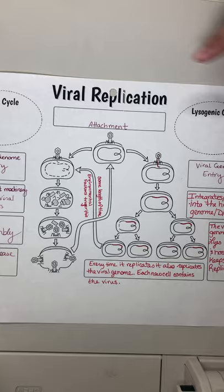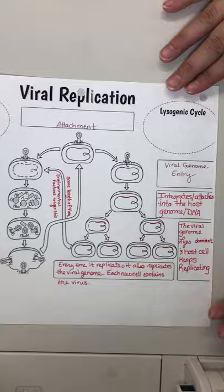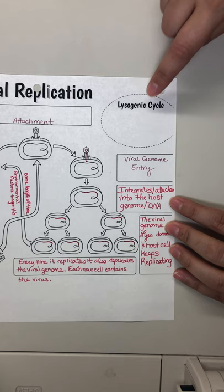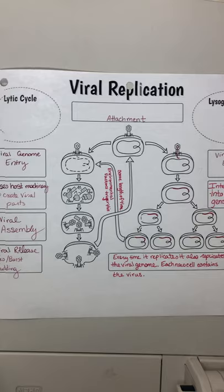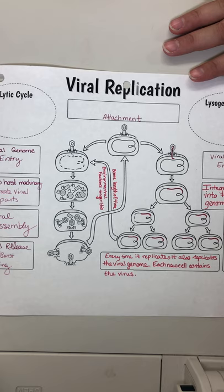So in viral replication: short word, short time period — lytic. Long word, it lies in wait — long cycle — lysogenic. This is what they tend to ask you about on the EOC, the end-of-course exam.